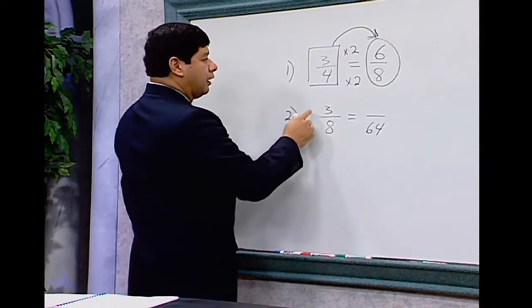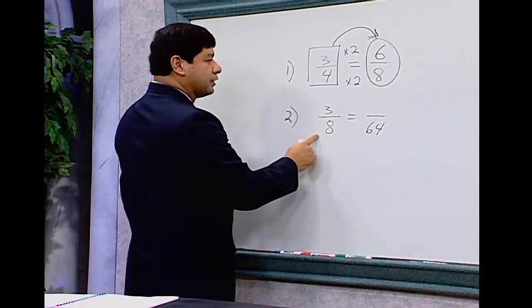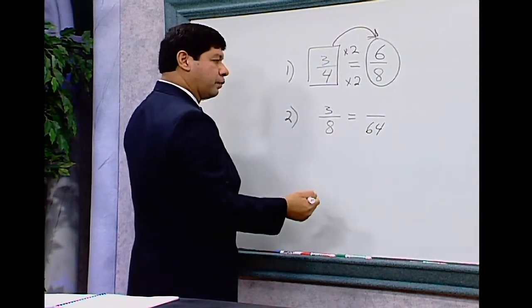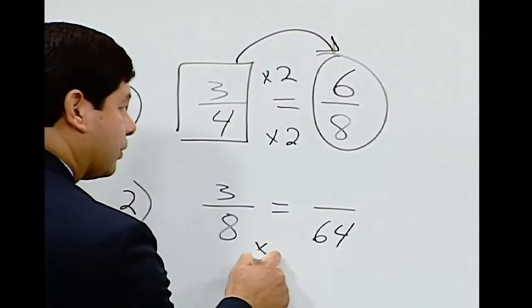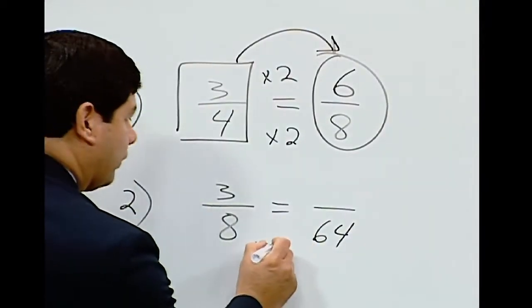The same process. Let's raise 3/8 to some number over 64. Now ask yourself, 8 times what number is equal to 64? Well, we know it's 8.